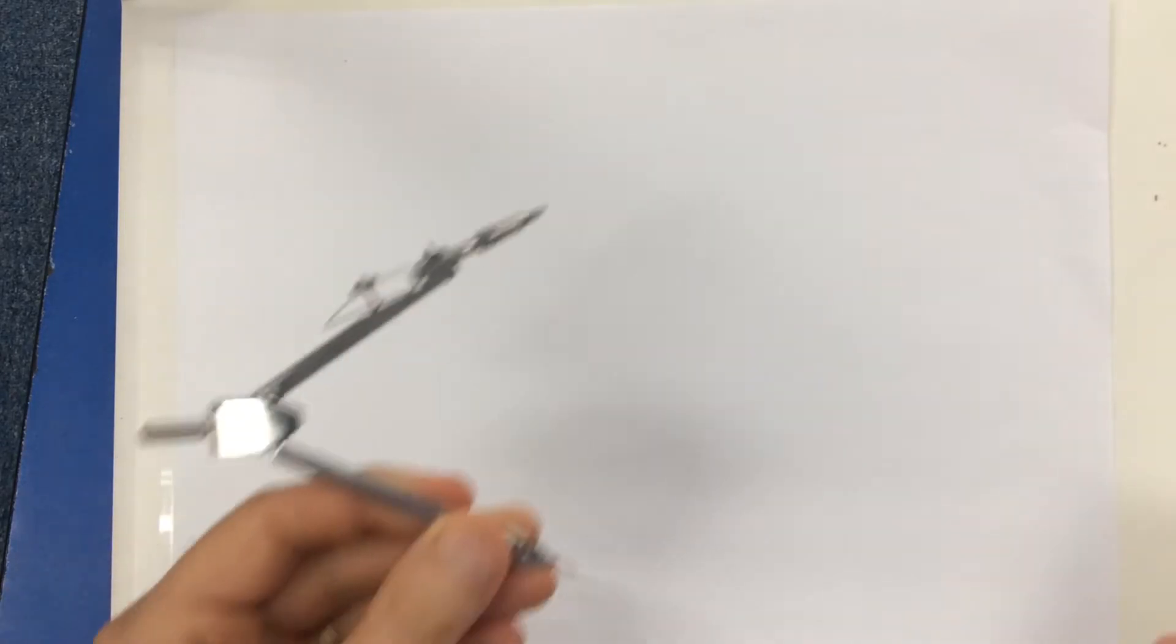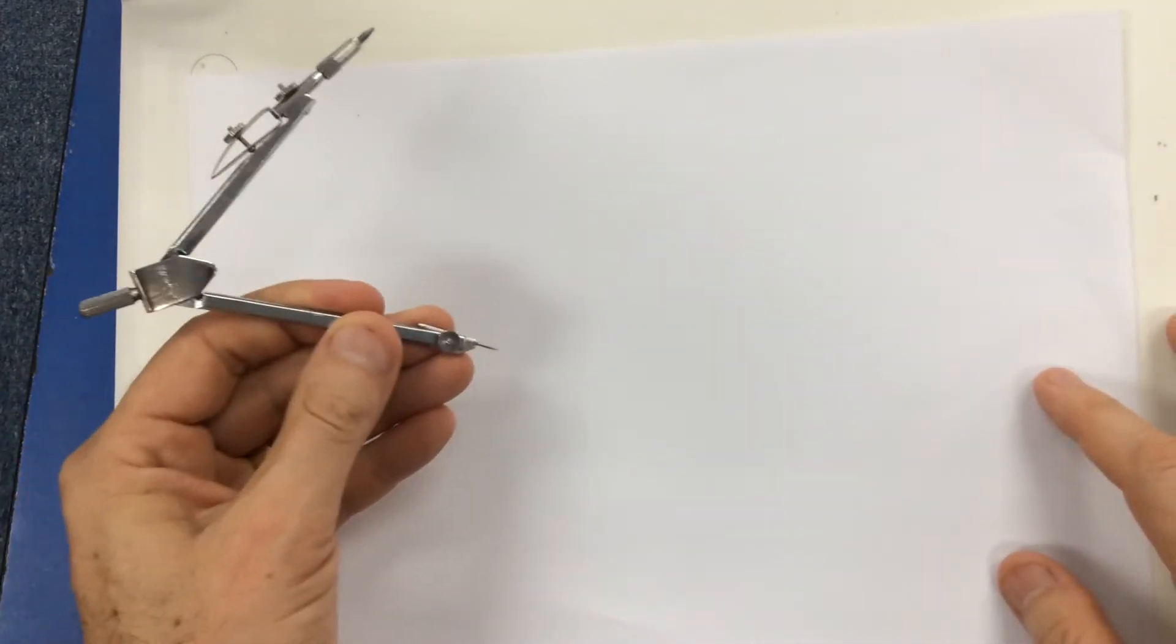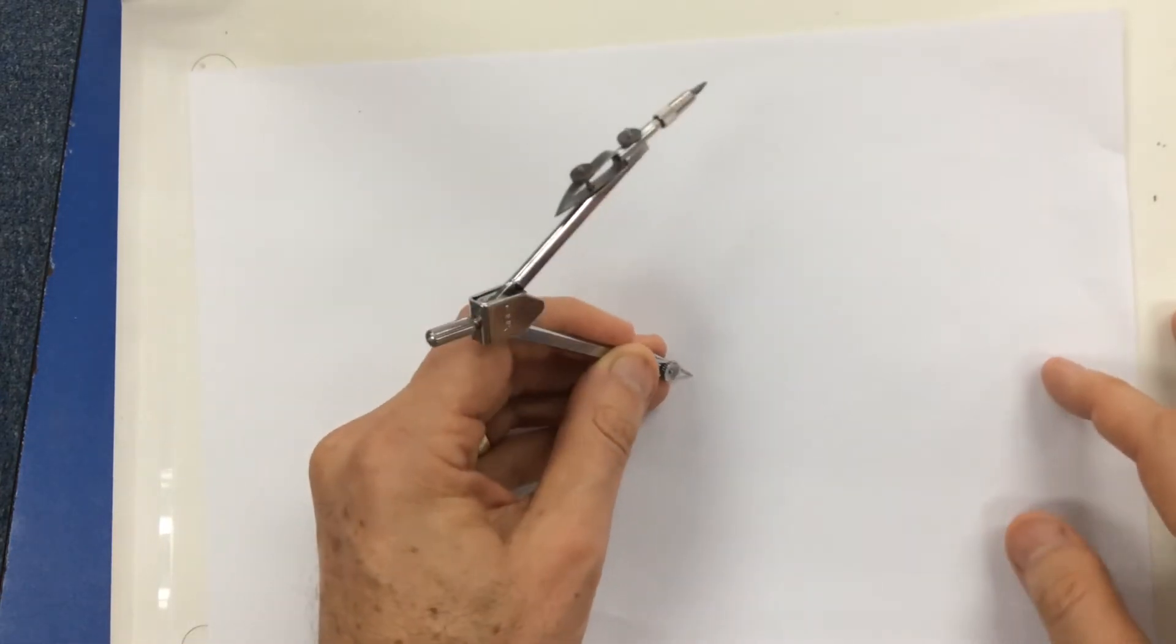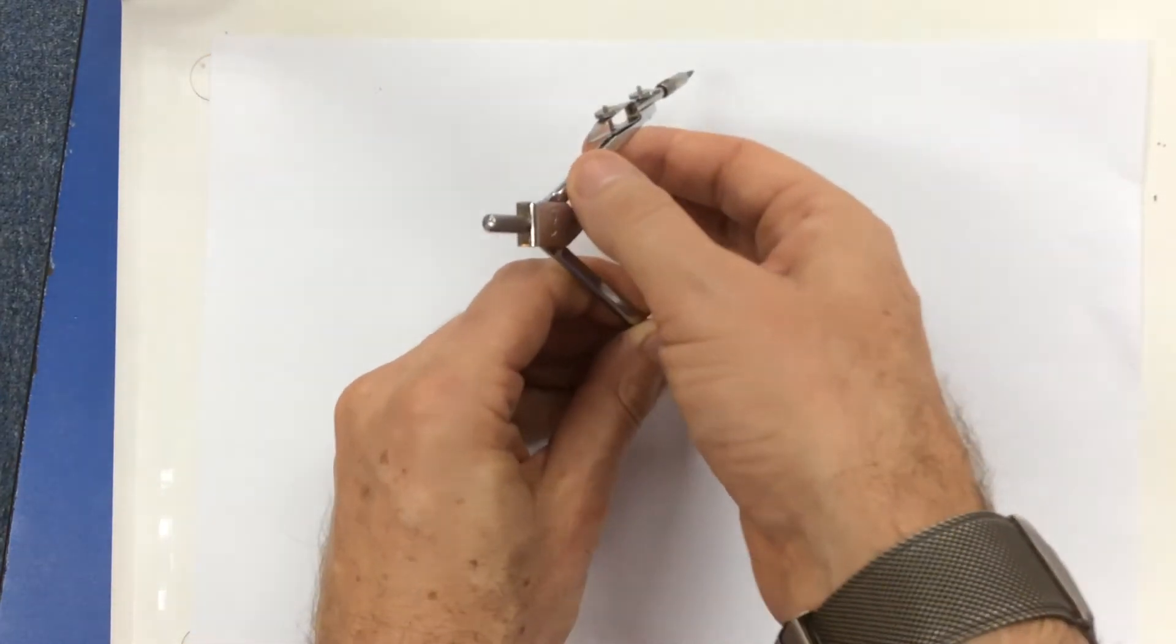I'm going to show you how to draw a net for a tetrahedron using a compass. So first of all I take my piece of paper and I put my point of my compass in the middle of the paper. It doesn't have to be exactly the middle.